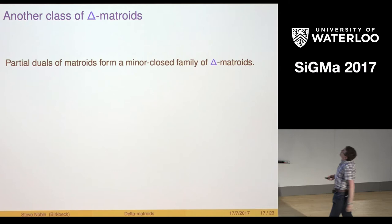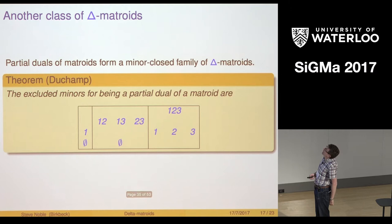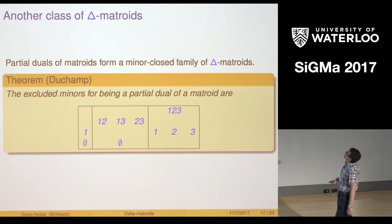Here's another quick class of delta matroids. If I take partial duals of matroids, that gives me a minor closed class. It's not too difficult to find the excluded minors for being a partial dual of a matroid. This is an earlier result by Duchamp. You can take this a little bit further.